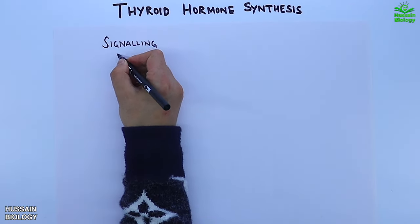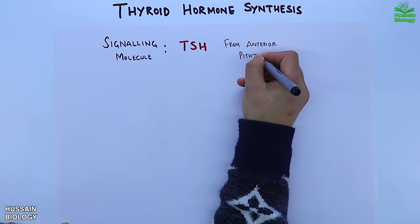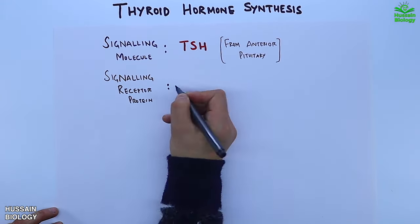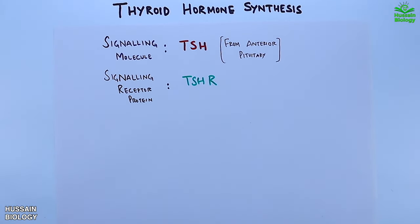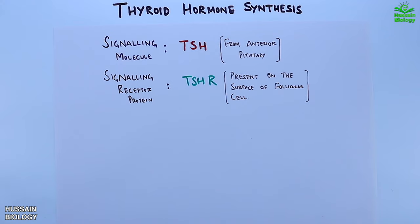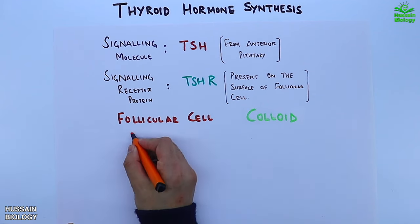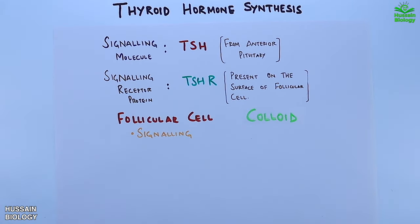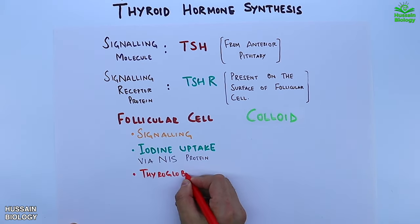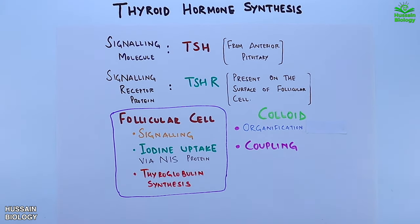In thyroid hormone synthesis, the signaling molecule is TSH — thyroid stimulating hormone — which comes from the anterior pituitary. The signaling receptor protein is TSHR (thyroid stimulating hormone receptor), present on the surface of the follicular cell. This process involves the follicular cell and the colloid: the follicular cell mediates iodine uptake via the NIS protein and thyroglobulin synthesis, while the colloid is the site of organification of iodine and coupling of iodothyrosine.